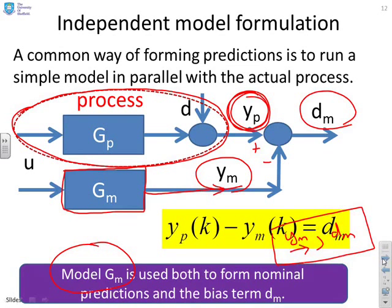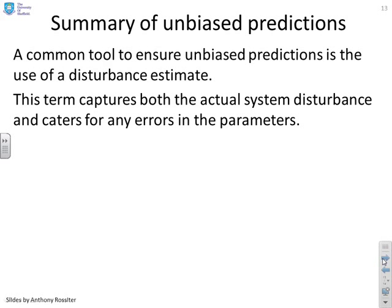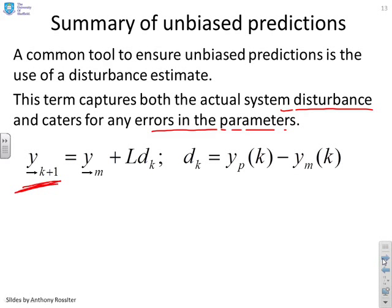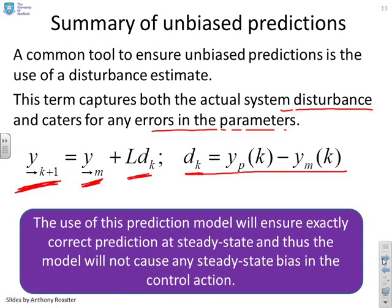To summarize unbiased predictions — using the method most common in the literature: your future predictions for the real process are given by your future predictions for the model plus your disturbance estimate DM, where DM equals YP(K) minus YM(K). This simple form ensures correct predictions at steady state, and thus the model will not cause any steady-state bias in the control action.